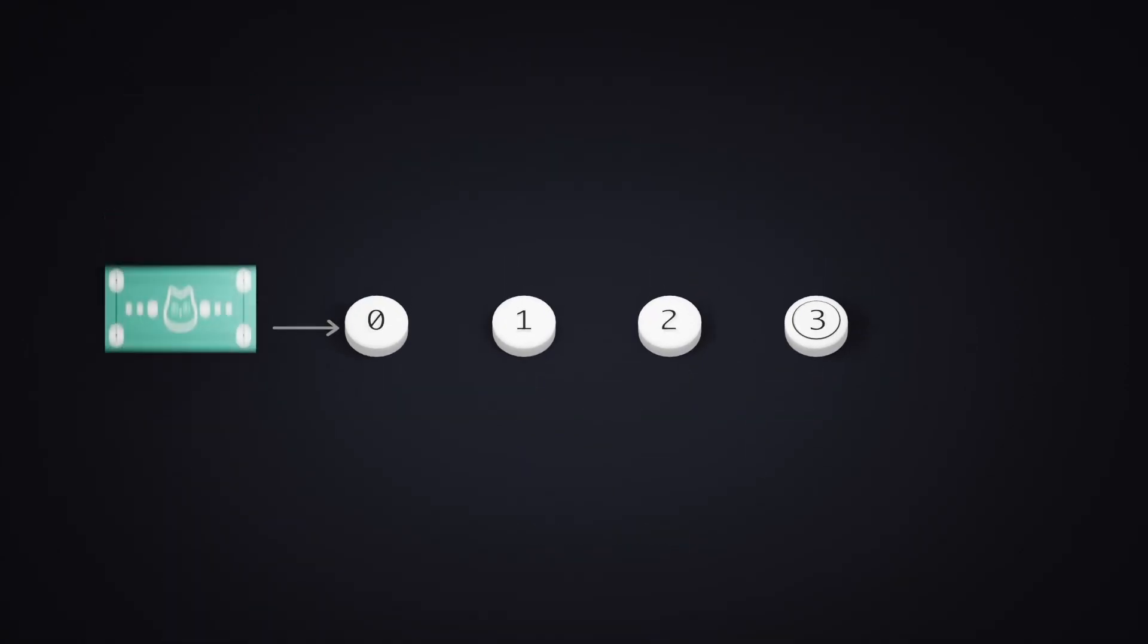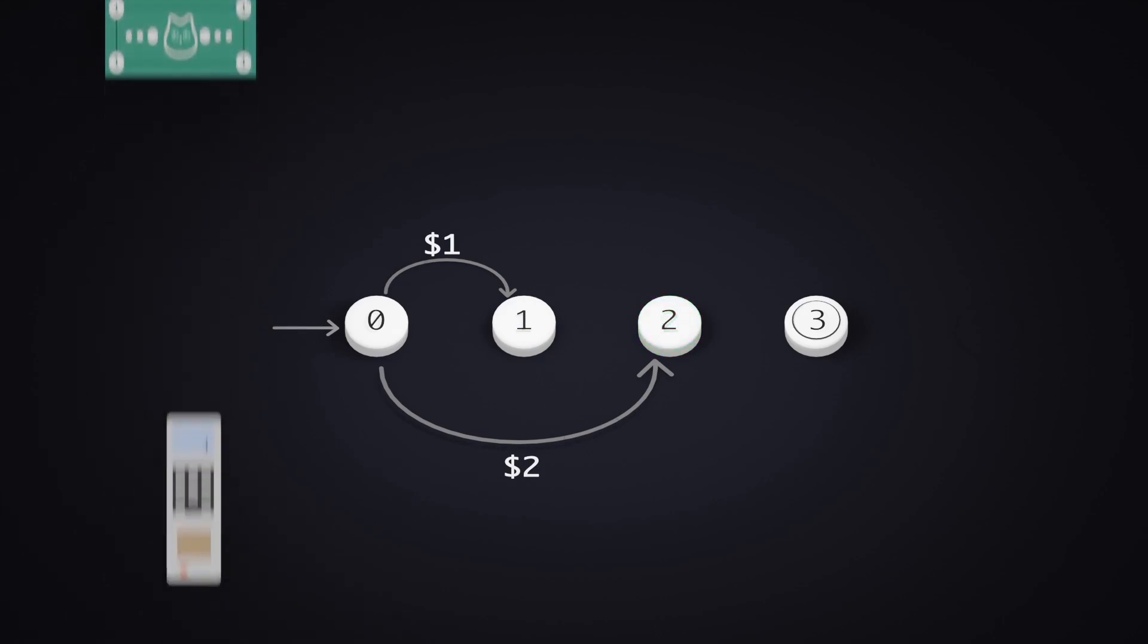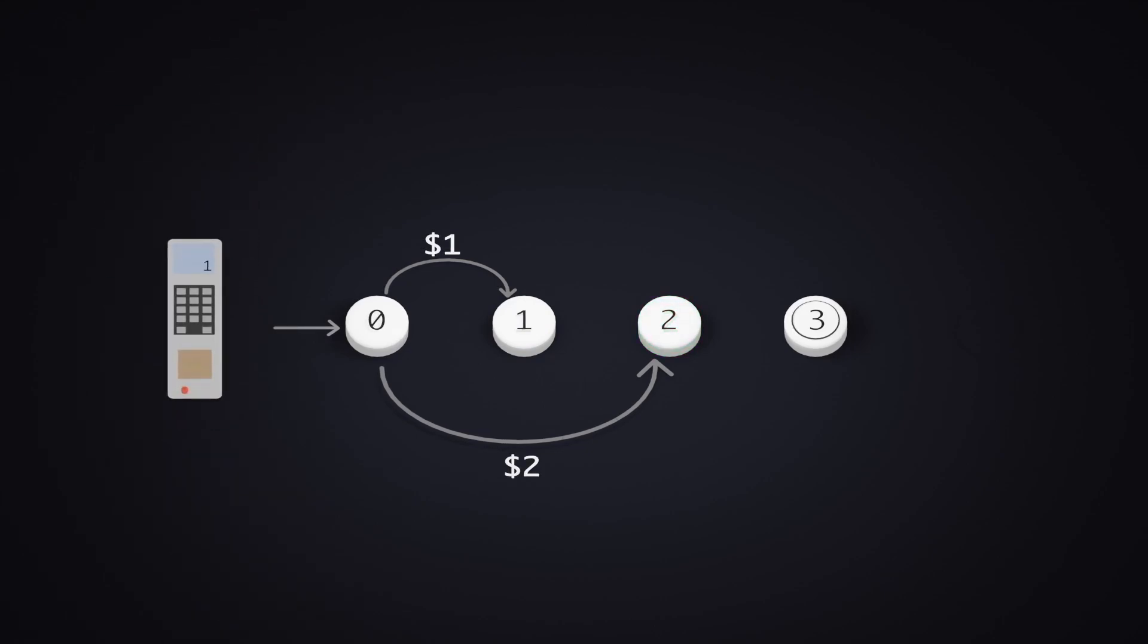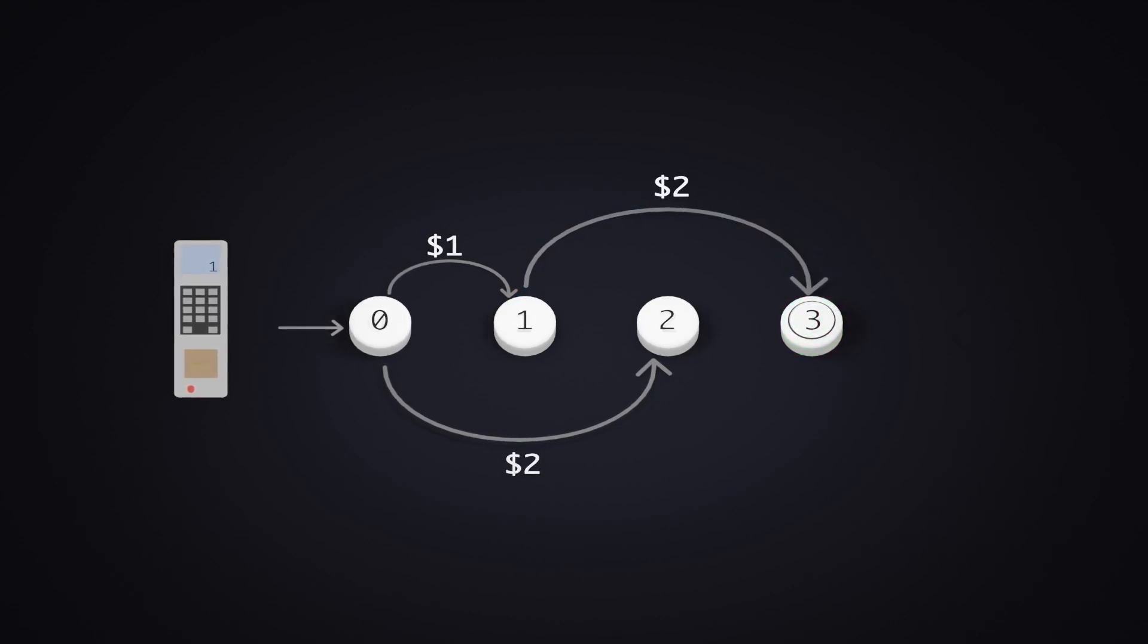Starting from $0, we can insert either a $1 or $2 note, helping us reach the $1 and $2 states respectively. At the state where $1 is already deposited, we can either insert a $2 note, letting us reach the accepting state directly, or just insert another dollar to go to the $2 state.